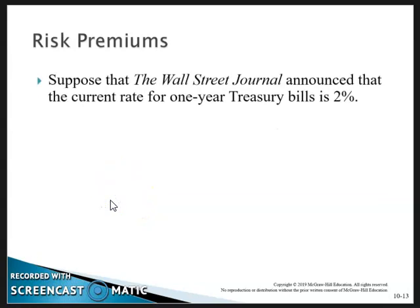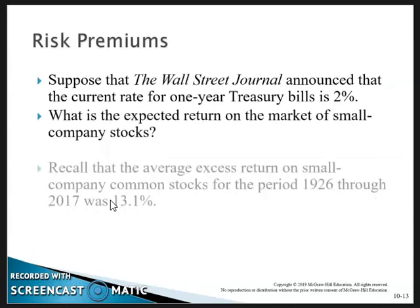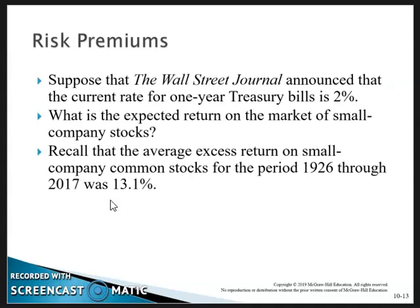Risk premiums: Suppose the Wall Street Journal announced that the current rate for one-year Treasury bills is 2%. What is the expected return on small company stocks? Recall that the average excess return for small company stocks for the period through 2017 was 13.1%.